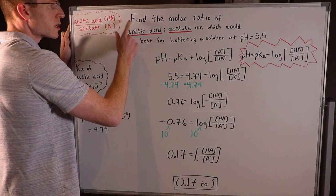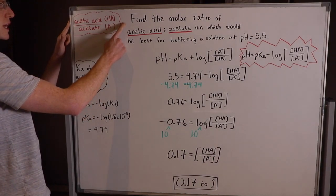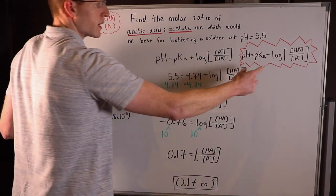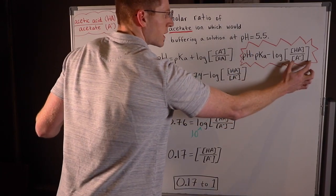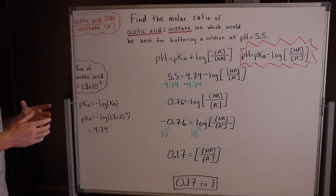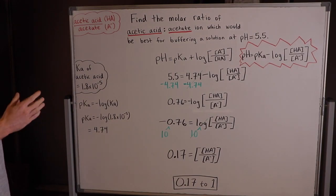So since in this problem here we want the ratio of HA to A minus, we want this equation here in this red enclosure because it already has the correct ratio that we're looking for, that we're going to solve for. So it's going to make the math easier.